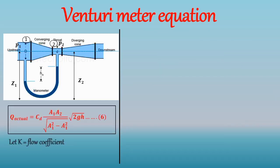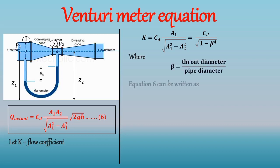Hence this equation gives the actual flow rate through the throat of the Venturi meter. Let K be flow coefficient such that K is equal to. Where beta is equal to throat diameter divided by pipe diameter. Hence equation 6 can be written as Q actual is equal to K A2 into square root of 2 GH.